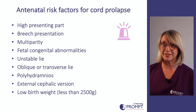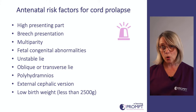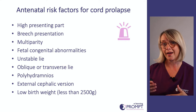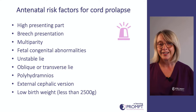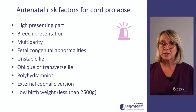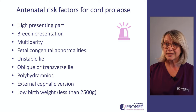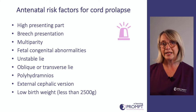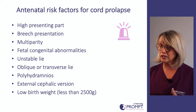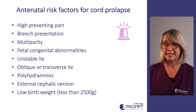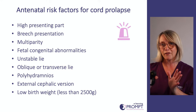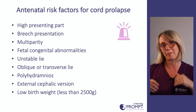Antenatal risk factors for cord prolapse predominantly involve the presenting part being high. These include breech presentation, multiparity, some fetal congenital abnormalities, unstable lie, oblique or transverse lie, polyhydramnios, external cephalic version, and low birth weight babies less than 2.5 kilograms. Essentially, in all these situations there is nothing well-applied in the pelvis.